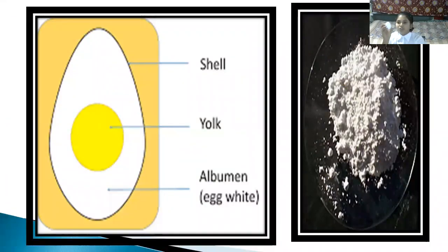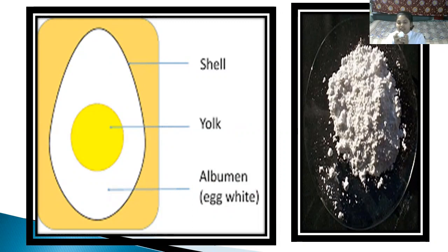So if we observe the different parts of an egg, the egg is covered by the hard shell, and inside there is one liquid which is called albumin, which is in white colour, and also the yolk, which is in yellow colour.